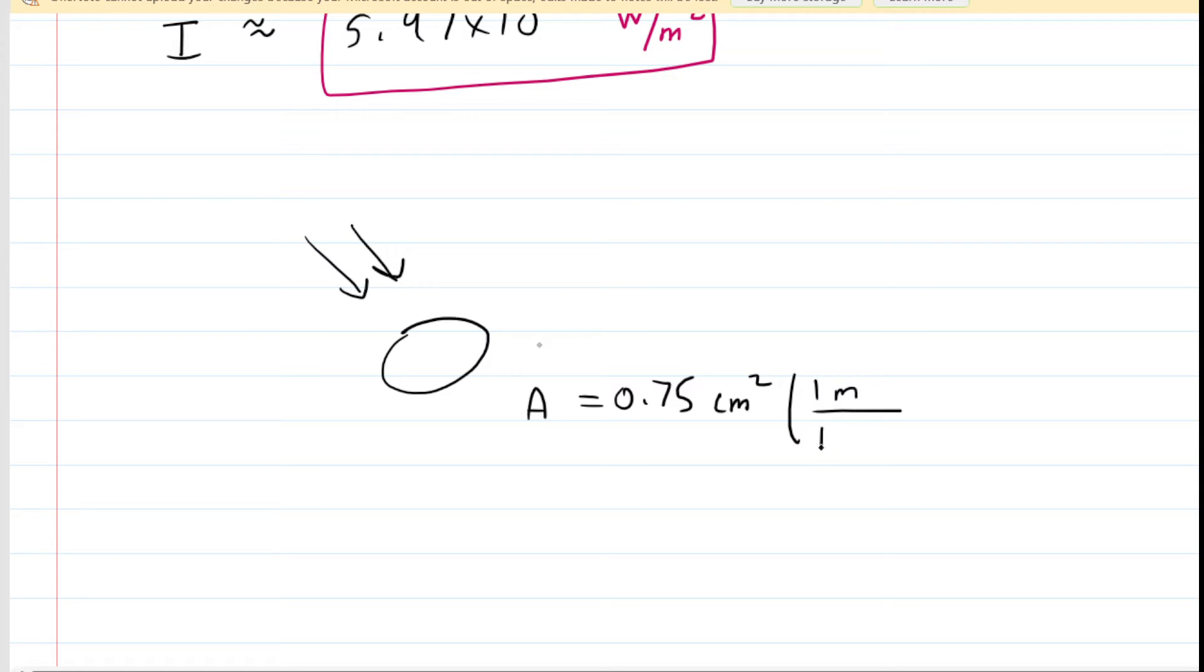We all know that 1 meter is equivalent to 100 centimeters, but be careful. Make sure you square this conversion factor so that the centimeters squared in the numerator and the centimeters squared in the denominator would cancel out. So if you enter that into your calculator, you're going to get 0.000075, and again, the unit now is meters squared.